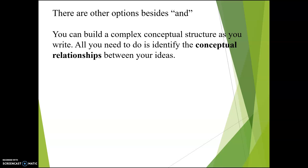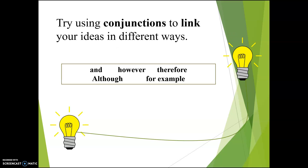There are other options besides AND. You can build a complex conceptual structure as you write. All you need to do is identify the conceptual relationships between your ideas. Try using conjunctions to link your ideas in different ways. Here are some conjunctions you might find helpful: AND, of course, is there, but we also have HOWEVER, THEREFORE, ALTHOUGH, and FOR EXAMPLE.